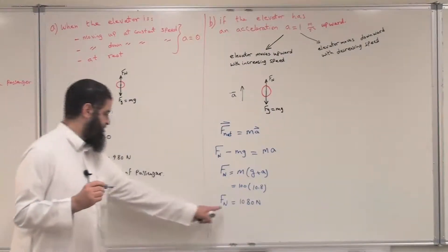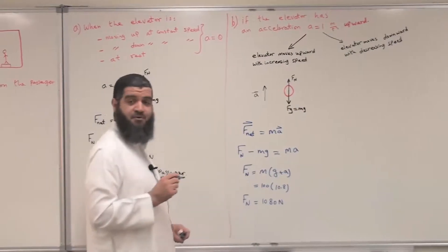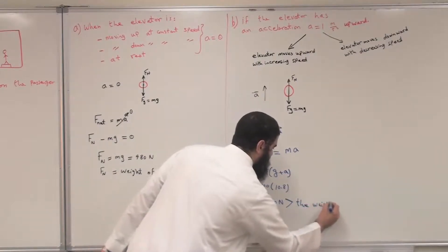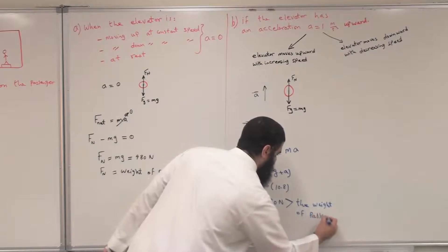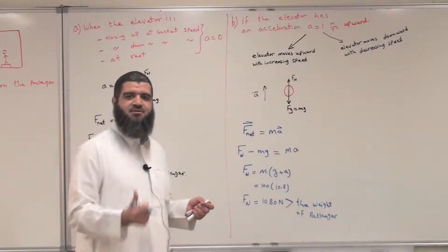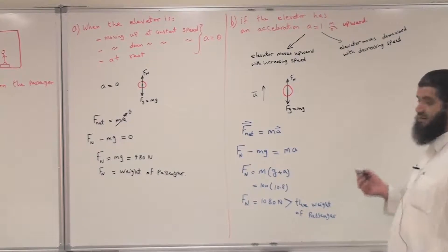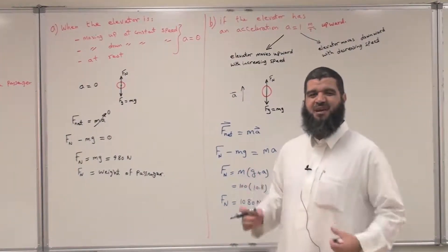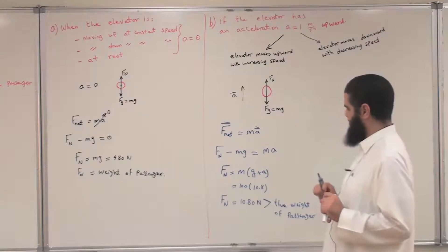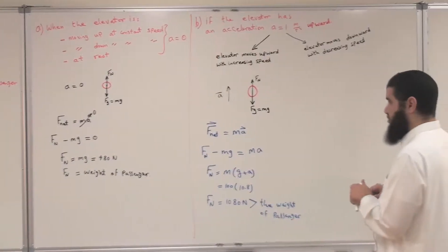As you can see, the normal force of 1080 newtons is greater than the weight of the passenger, which was 980 newtons. We sometimes call this the apparent weight — this is not your actual weight. You can feel this when the elevator is accelerating upward: you feel a stronger push on your legs and back.